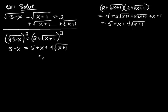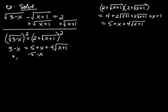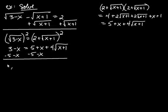Let's isolate the radical again. I started by isolating one radical; now that a single radical remains, I isolate that one. I subtract 5 and subtract x from both sides, which leaves negative 2 minus 2x equals 4 times the square root of x plus 1.